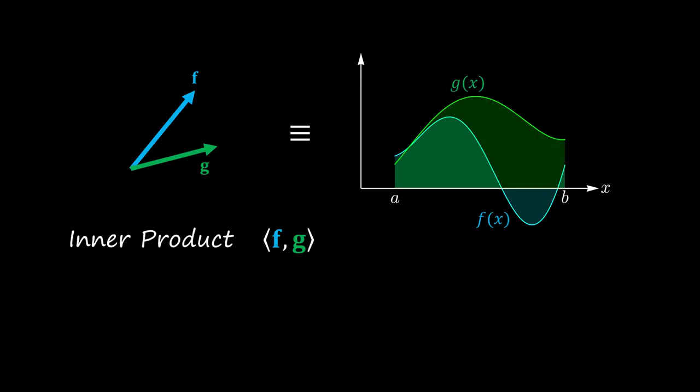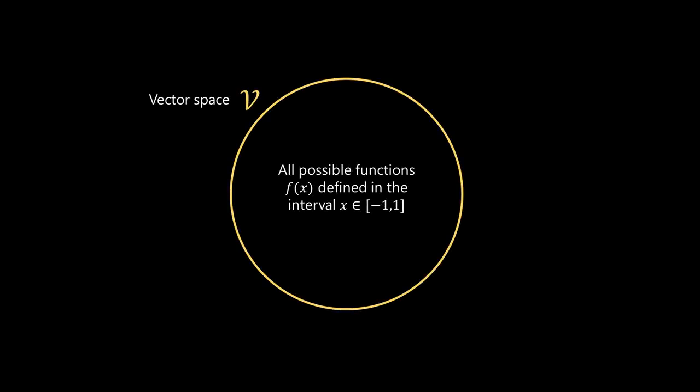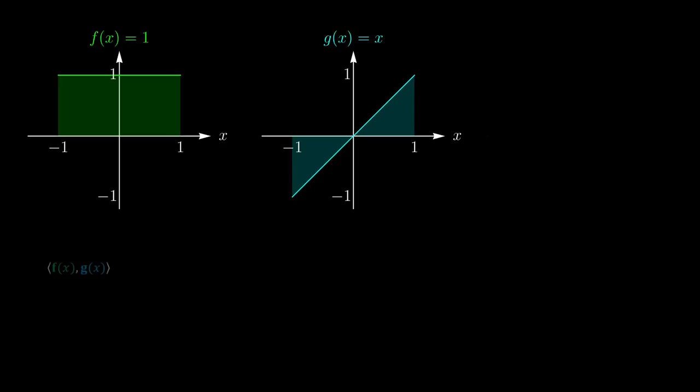Knowing how to do the inner product, there are many things we can now do with functions. We can check whether functions are orthogonal. For example, consider the space of functions in the interval [-1,1]. Let's consider the functions f(x) = 1 and g(x) = x. Are these two functions orthogonal in this space? We can check this by doing their inner product. The result is 0, so by definition we can say that the two functions are orthogonal to each other.